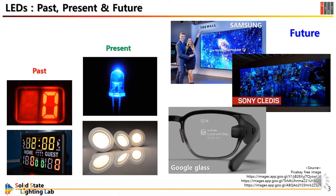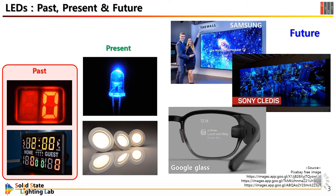The first LED was made more than 100 years ago. The first semiconductor-based modern type LED was red and it was invented about 60 years ago. And then green was developed. But they were very dim and used only for indicators.